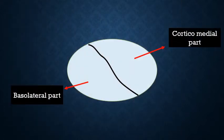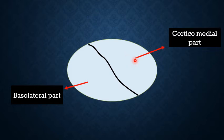The amygdala has two parts: the corticomedial part and the basolateral part.